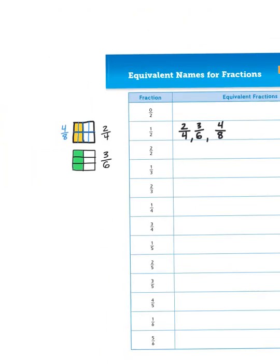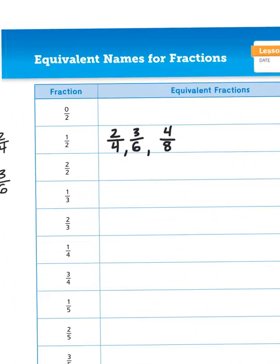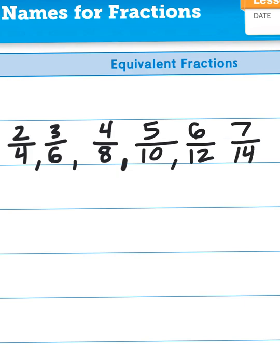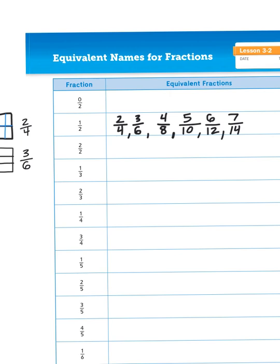So I could take a look at each of these fractions and just realize that I'm just skip counting here. I could continue that pattern: 4 eighths, 5, 6, 7, 10, 12, 14, and so on. All those fractions are equivalent to 1 half because the numerator or top number is increasing by 1 and the bottom number or denominator is increasing by 2.